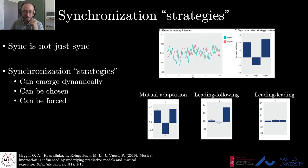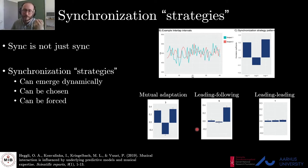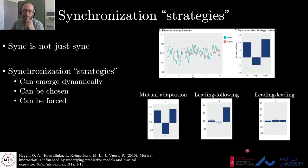In previous work we have shown that there are at least three distinct synchronization strategies. Mutual adaptation is perhaps the most common one, wherein dyad members continuously and reciprocally adapt to each other on a tap-to-tap basis. In leading-following, one of the dyad members is less adaptive, forcing the other to be more adaptive for synchronization to occur. Leading-leading is a special case wherein the dyad achieves good synchronization yet there appears to be little to no adaptation between the dyad members.